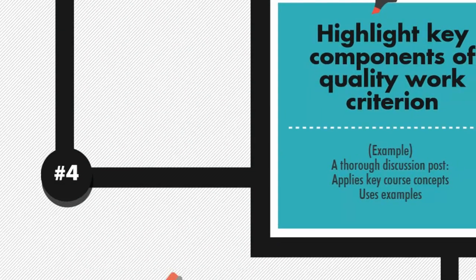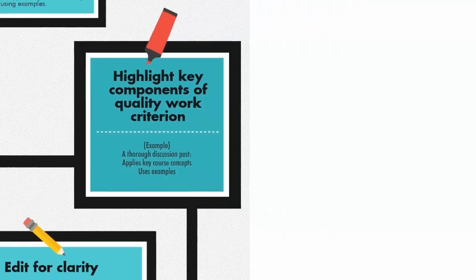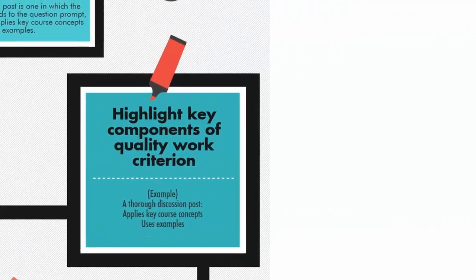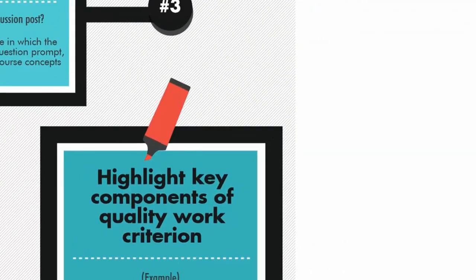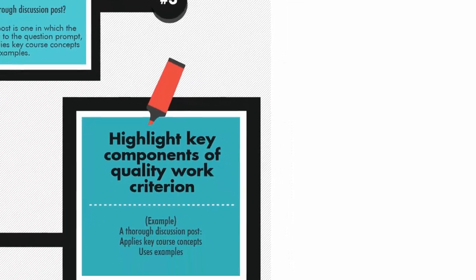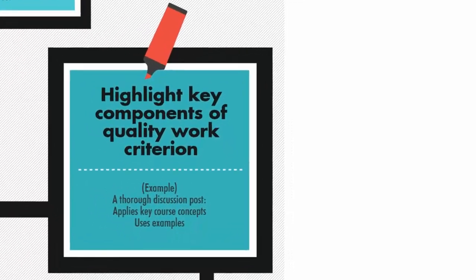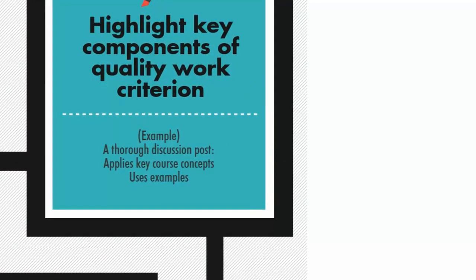Step 4: Highlight Key Components of the Quality Work Criterion. For example, a thorough discussion post applies key course concepts and uses examples.